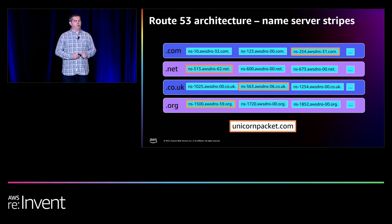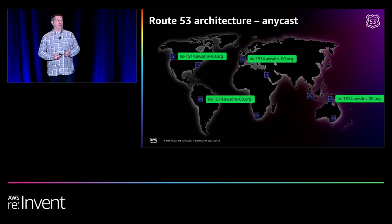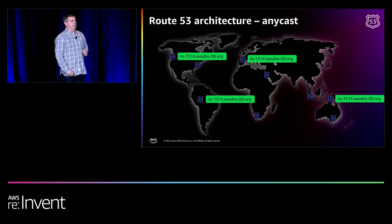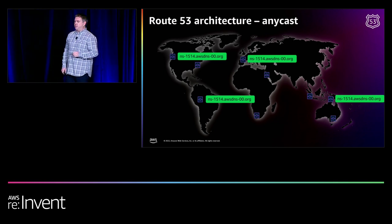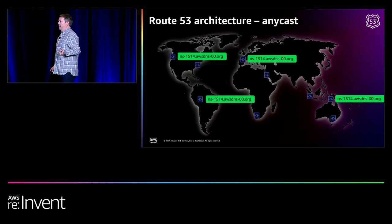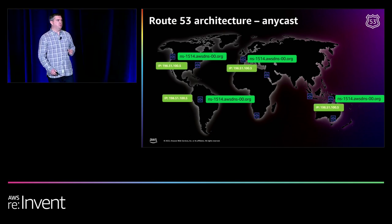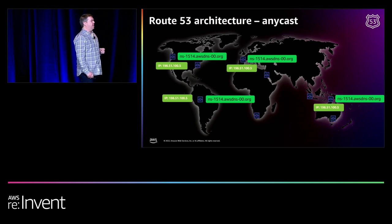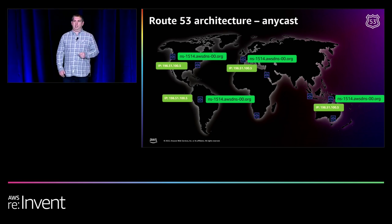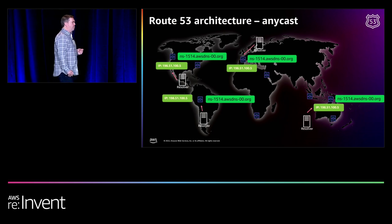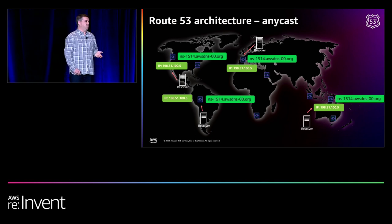Another piece to consider is that there aren't just four name servers placed around the world for a particular domain. We use something called Anycast, which in Route 53 means each of these name servers has exactly the same IP address but is hosted in multiple edge locations around the world. BGP announces that into the route tables for all of our end customers to query, so depending on where you are, you might hit the instance of that name server nearest to you.